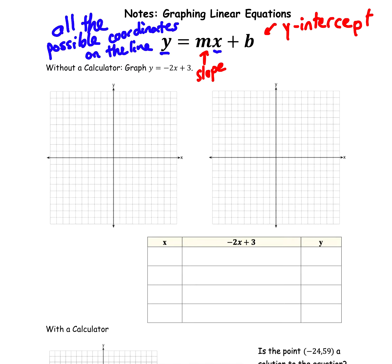Let's graph the first one: y equals negative 2x plus 3. We're going to graph this three different ways. The first way is not using an xy table, just using the slope and intercept directly. So m is negative 2, or negative 2 over 1, and b is 3.